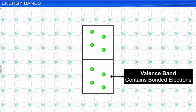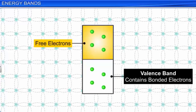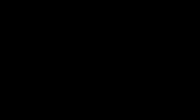The upper unfilled band is called the conduction band. In the conduction band, free electrons are available. Electrons cannot reside in the forbidden energy gap. In the case of the silicon crystal, the interatomic distance is in the range of 1 angstrom to 7 angstrom.